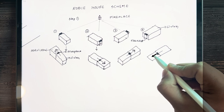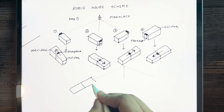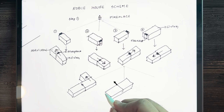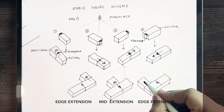Let's elaborate on one of the compositions. We fix the core unit and extend the services of the house. These services are placed in three different arrangements: extensions from one edge of the house, from the middle of the house, and from the other end of the house.